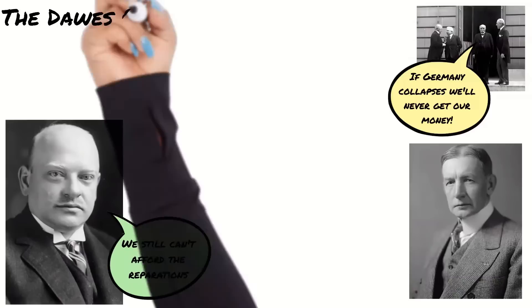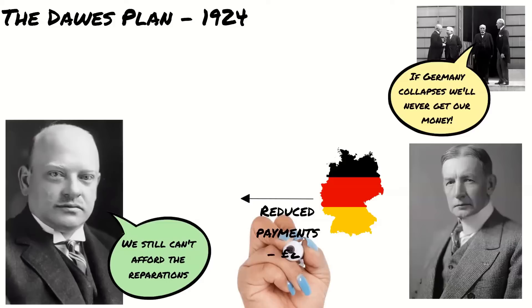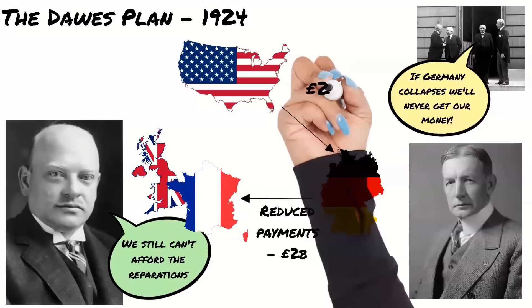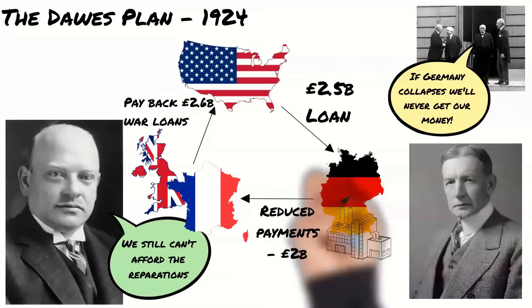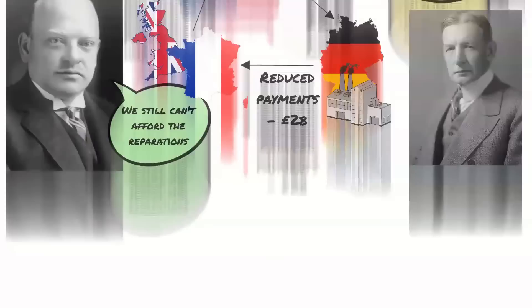The Dawes Plan reduced the reparations payments to 1 billion marks in the first year, rising to 2.5 billion after five years, thereby allowing Germany to get back on its feet. The reparations payments would be in part funded by American loans, which would also go towards supporting and building Germany's industry. This would lead to a stronger German economy and would mean that the Allies were more likely to receive the reparations payments.